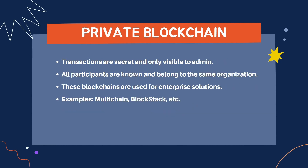The next type is private blockchain. Transactions are kept secret and only visible to admins. All participants are known and belong to the same organization, and these blockchains are used for enterprise solutions. Unlike Etherscan where transactions are publicly viewable, in private blockchains only admins can view them. Examples include MultiChain and Blockstack — these are quite rare examples. We will make a dedicated video on this as well.